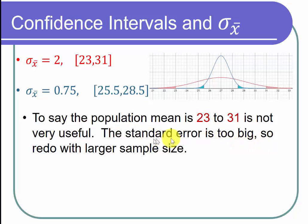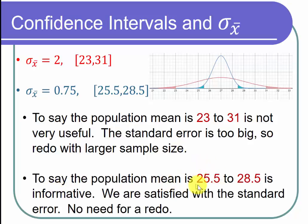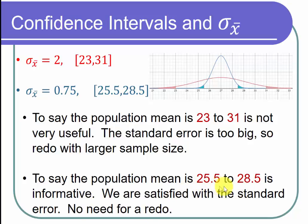Because the standard error is too big, we'd have to redo the study with a larger sample size, which is a lot of work. On the other hand, saying the population mean is somewhere between 25.5 and 28.5 is informative. We can say that runners are a little lower on hydration than recommended but not dangerously so. Maybe we add an extra water stop with two or three ounces so they're in a healthy range. There's no need for a redo because we have really good information on how to help these marathon runners.